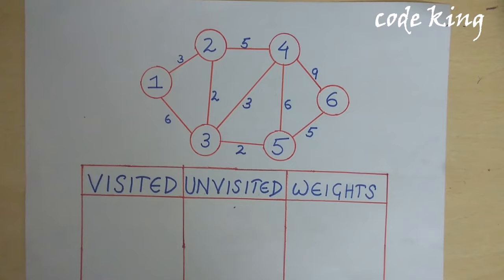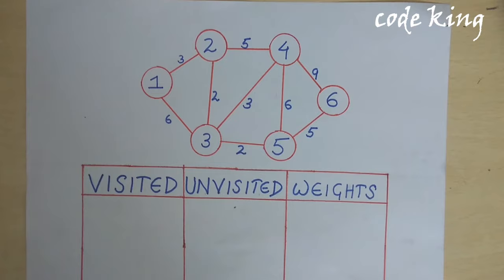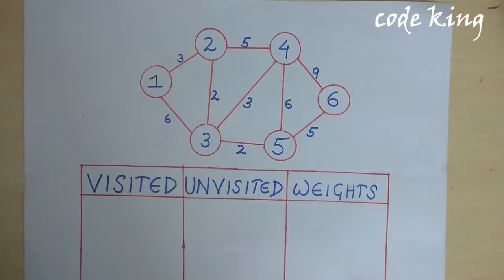Let's start. Here we are solving the single source shortest path algorithm, that is Dijkstra's algorithm. As the name suggests, we are going to choose the source and calculate the shortest path possible to all the other nodes. Let's assume node 1 to be the source, and we will explore all its neighbors.